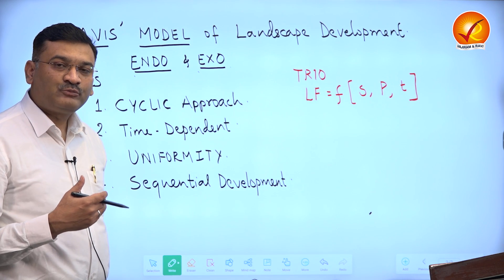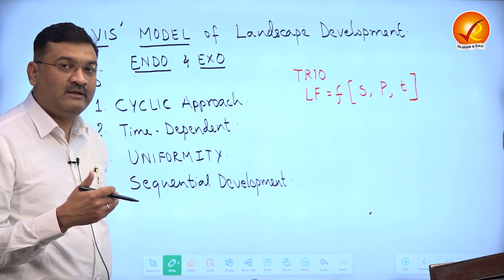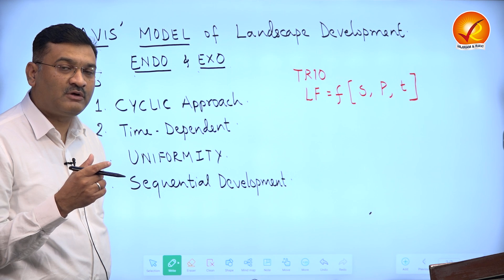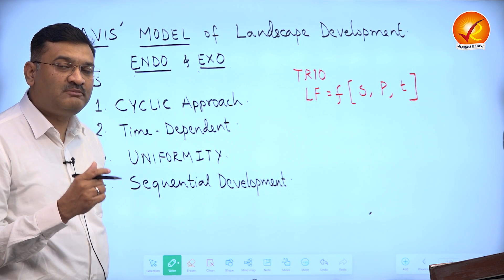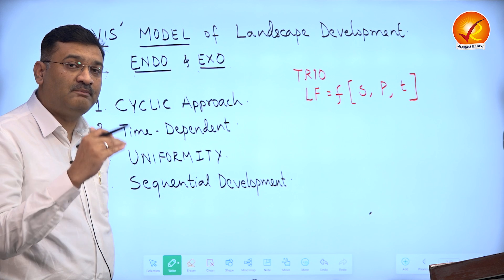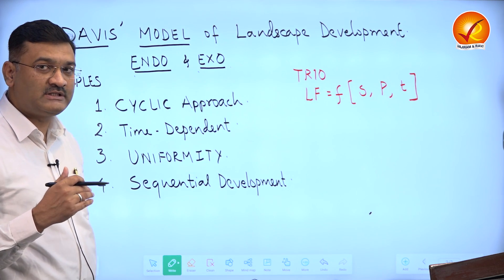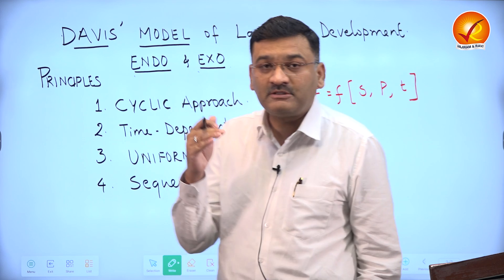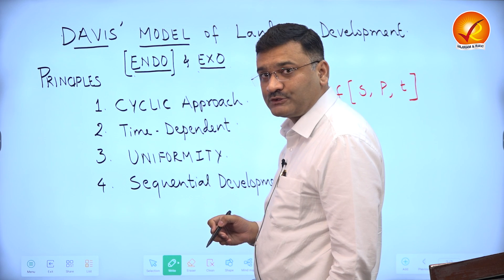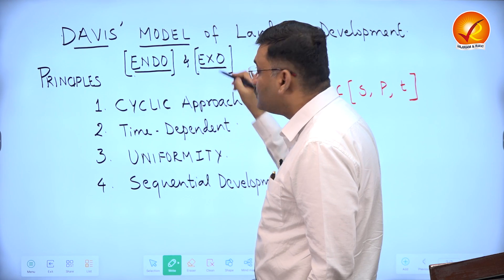According to Davis, the initial upliftment of the landform is by the operation of the endogenetic force, and this endogenetic force operates for a very short duration — this is considered the preparatory stage of the landform. How the landform reaches its absolute relief, meaning its maximum height, is by the operation of the endogenetic force. The remaining part of the evolution of the landform is then driven by exogenetic forces.